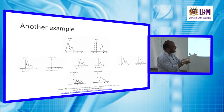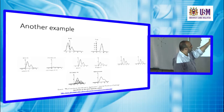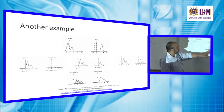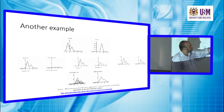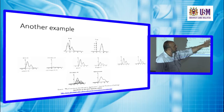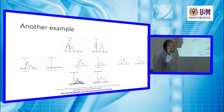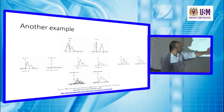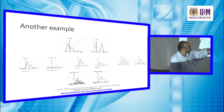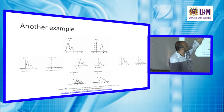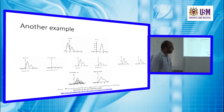We sum these values together at each point — at x=2, then x=3, then x=4. The result of this summation is the convolution between g(x) and f(x).